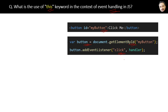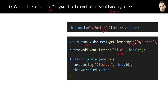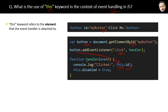In the event handler function, the 'this' keyword will refer to the element to which the event handler is attached. So in this case, 'this' refers to the button element — as written here — remember, 'this' refers to the element.